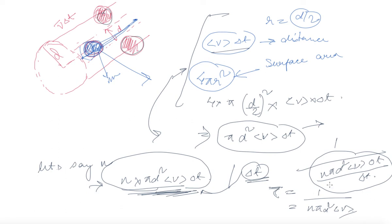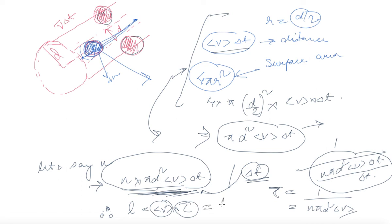This is the time between two successive collisions. Therefore, the average distance between two successive collisions — that is, the mean free path — is L = v̄ × τ. This gives L = 1 / (n·π·d²). This is the mean free path, and this completes the derivation.